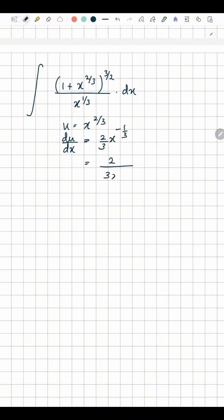You can rewrite this as 2 over 3 times x to the power 1 over 3. So now you could write 3 times x to the power 1 over 3 dot du over 2 equals dx.